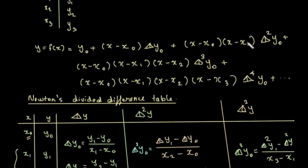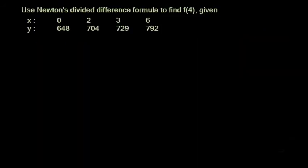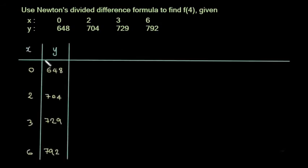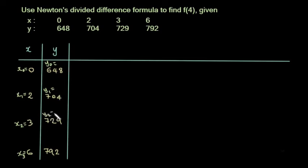Now here is the problem: Use Newton's divided difference formula to find f(4). The given data points are at unequal intervals: x = 0, 2, 3, 6 with corresponding y values. We set up x₀, x₁, x₂, x₃ and y₀, y₁, y₂, y₃ = 792, and form the divided difference table.